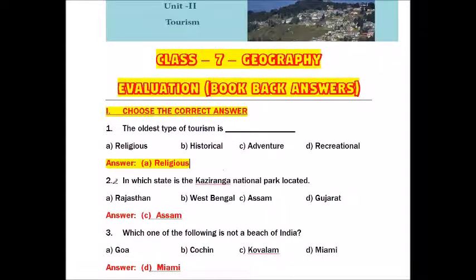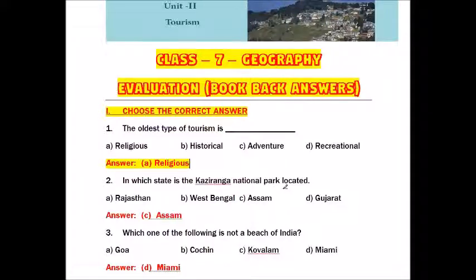Question number two: In which state is the Kaziranga National Park located? Options are Rajasthan, West Bengal, Assam, Gujarat. The answer is Assam.